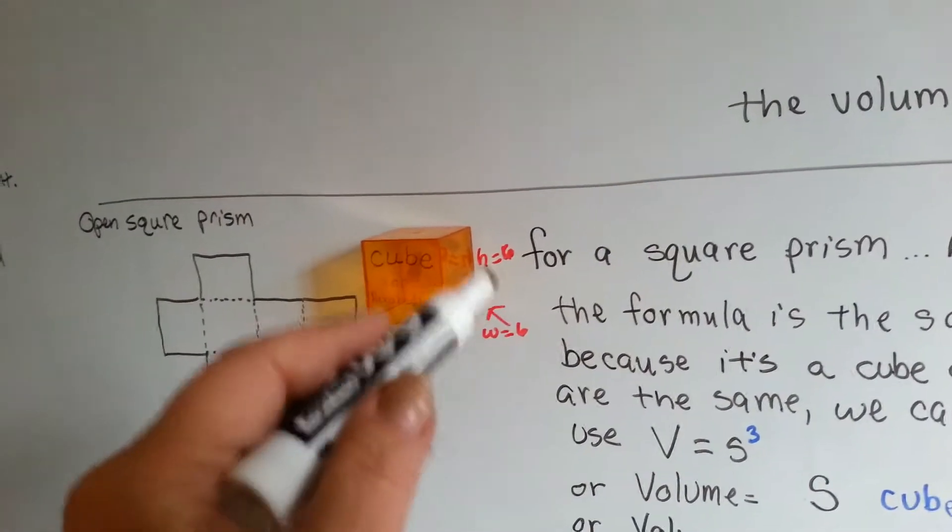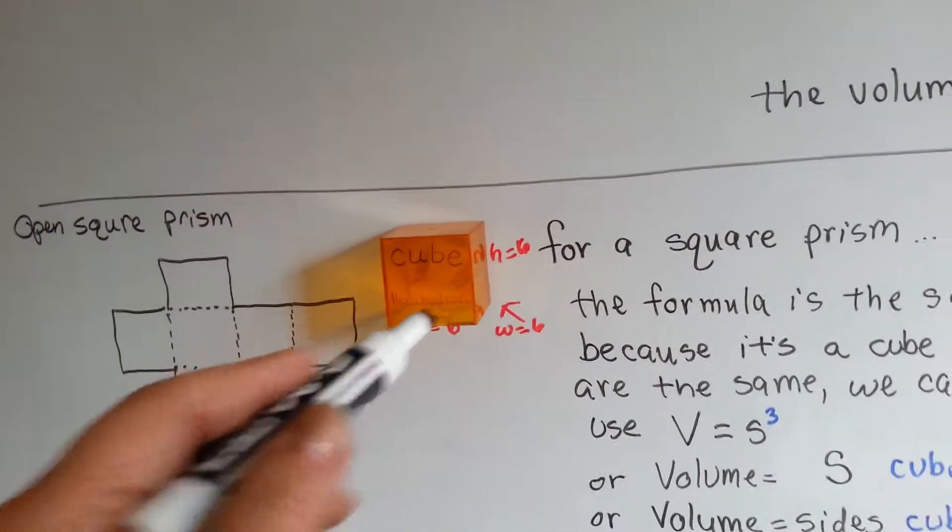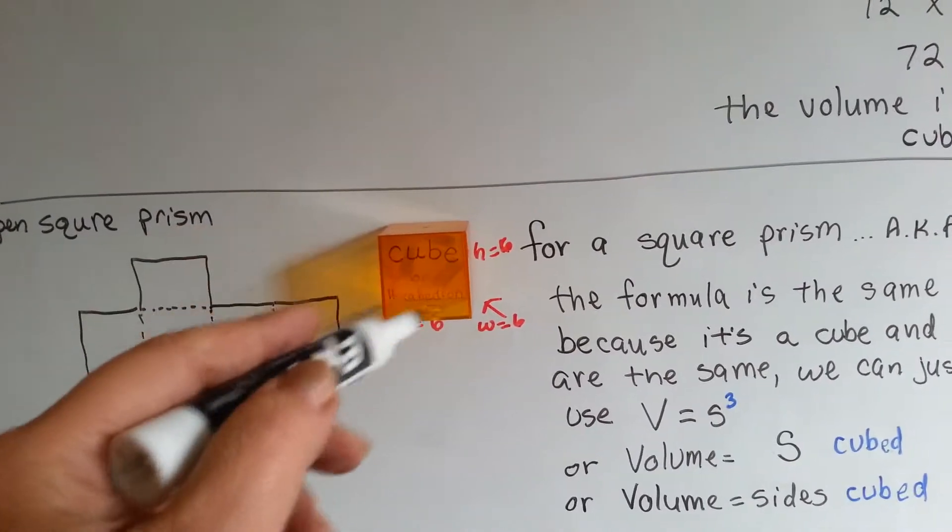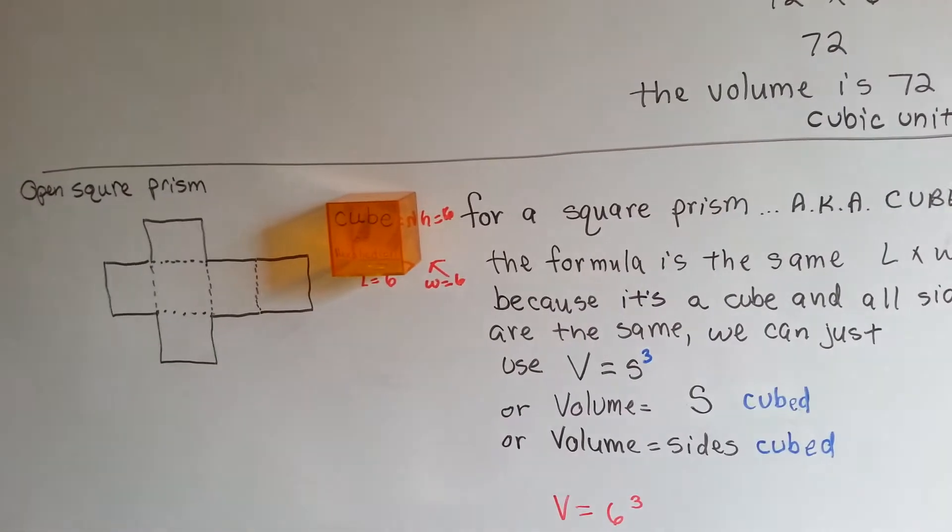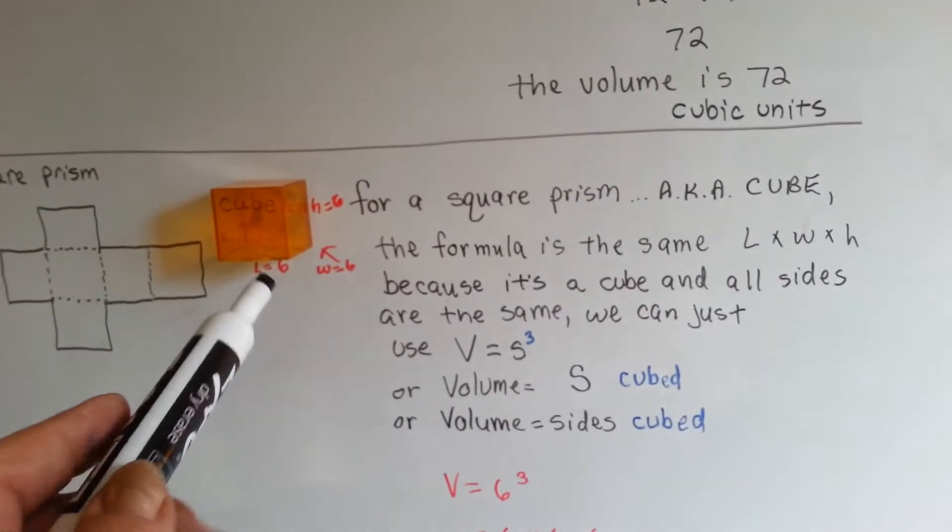Because these are all the same, because it's a perfect square like a Rubik's cube, think of a Rubik's cube and how all those little squares are making up the Rubik's cube. That's like square volume, that's like cubic volume.